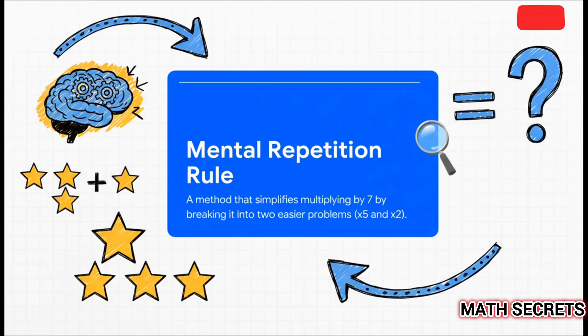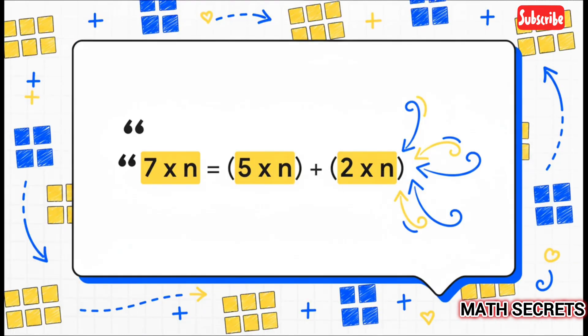So the rule is really just a formal way of saying you take one tough multiplication problem, anything times seven, and you just split it into two really easy ones. Then you just add the results together. Here's what that looks like as a super simple formula. Now, don't let the n freak you out. n is just any number you want to multiply by seven. So instead of doing seven times n, you just do five times n, then two times n, and add those two answers up. That's all there is to it.